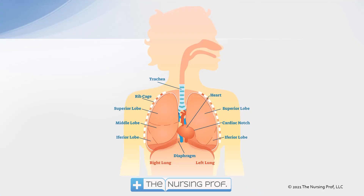Let's review the respiratory system before we get started, just so you'll have a better feel for how we're going to get a ventilator-associated pneumonia. We have our upper airway — the nose, the mouth — going down into the trachea, then into the lungs, starting with the bronchi moving down into the bronchioles, and eventually disseminating into the alveoli.